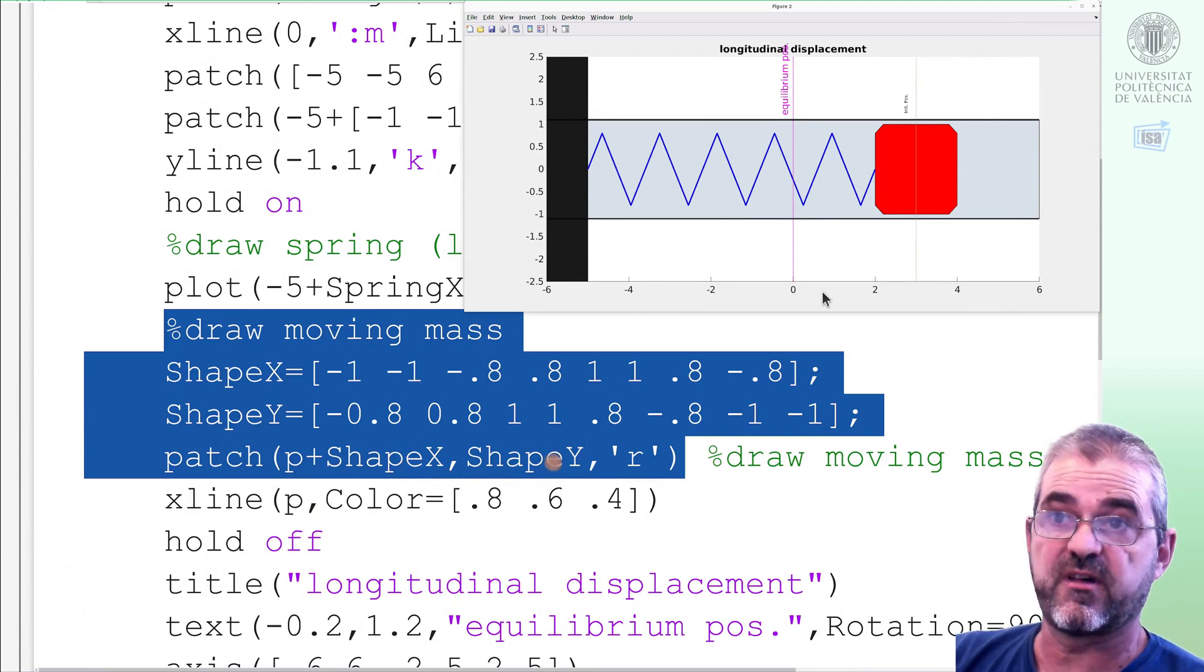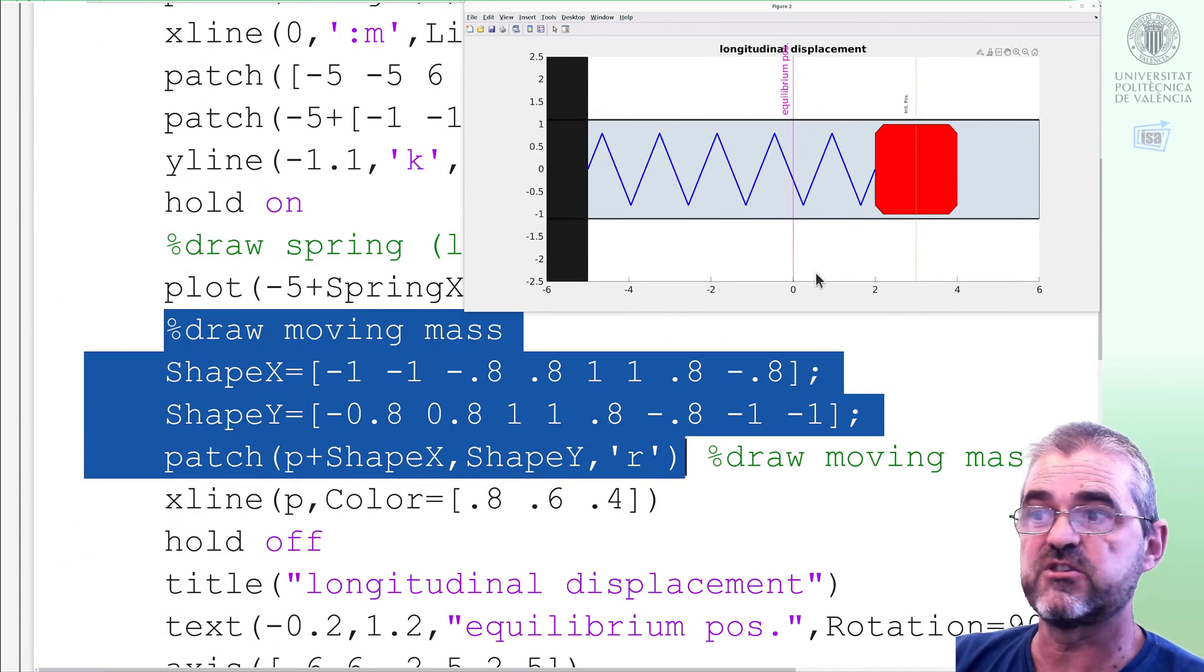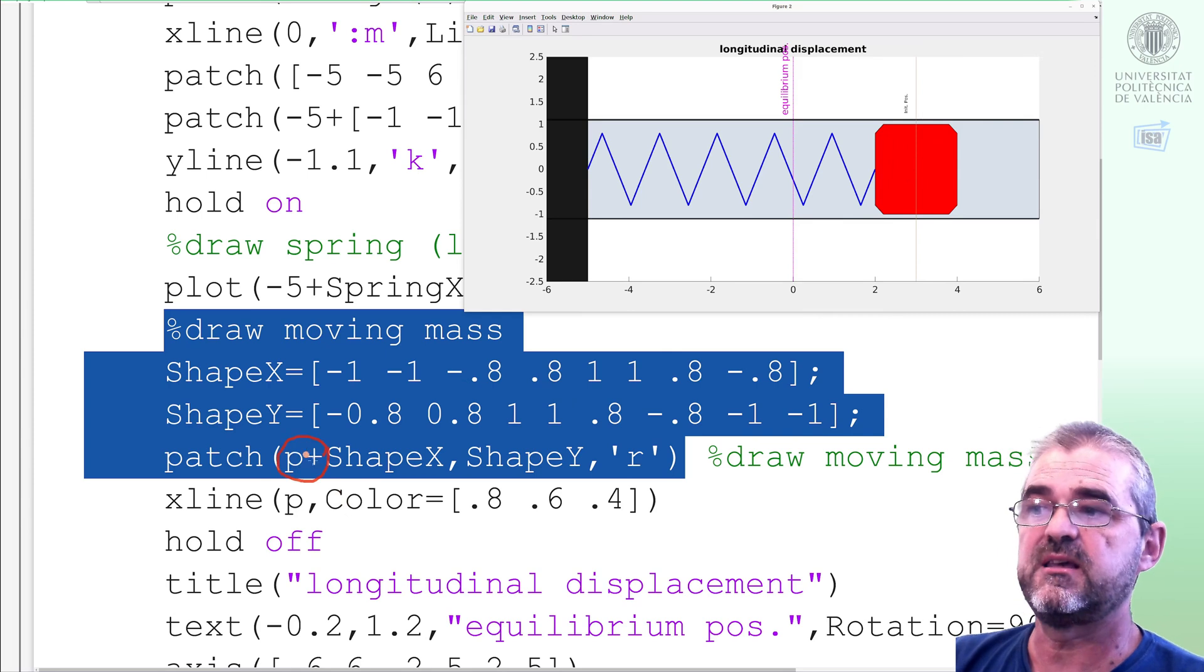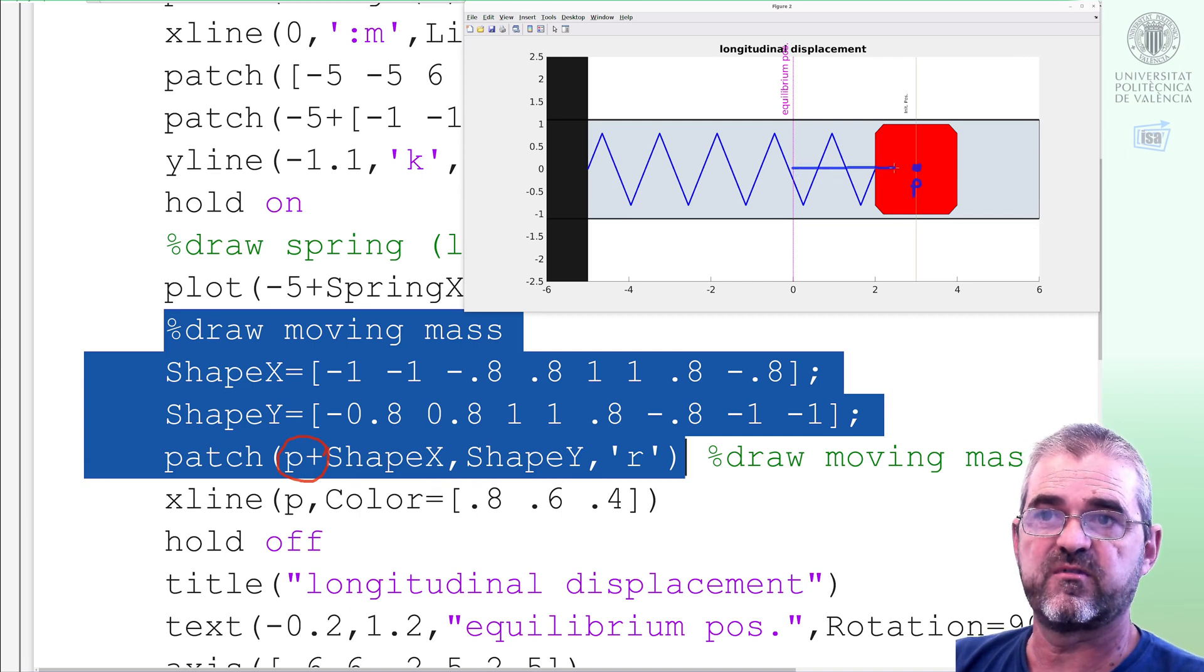This patch command draws the red moving mass. I execute it so that it moved from the equilibrium to the initial position for the animation. And basically, this is a polygon. This is this kind of almost a square that is displaced p units to the right-hand side. Because this is p. So we move stuff p units to the right-hand side. And so this patch command ends up drawing the red moving object at each frame.